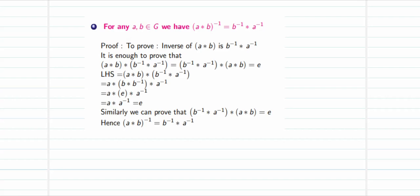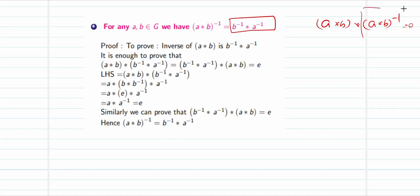The fourth property states that for any elements a and b belonging to G, (a★b)⁻¹ = b⁻¹★a⁻¹. To prove this, it is sufficient to show that (a★b)★(b⁻¹★a⁻¹) = e, which would confirm that b⁻¹★a⁻¹ is indeed the inverse of a★b. We begin with a★b and perform the binary operation with b⁻¹★a⁻¹.